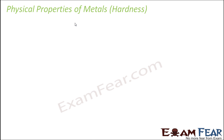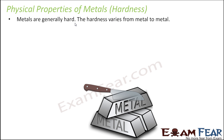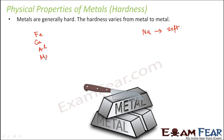The next property is hardness. Metals generally are hard; however, the hardness may vary from one metal to another. For example, sodium is comparatively soft when compared to other metals like iron, copper, aluminium, and magnesium, which are hard.